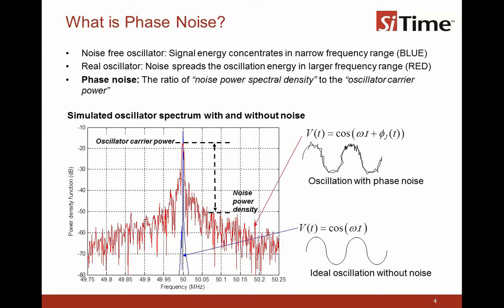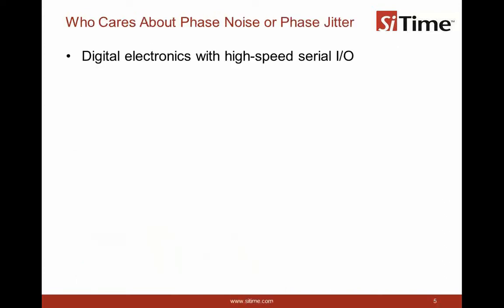They are typically expressed as a ratio of the noise spectral density to the oscillator carrier power. So it's a ratio that we are specifying as phase noise. Let me show you an example.